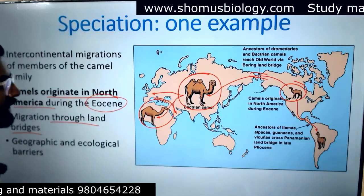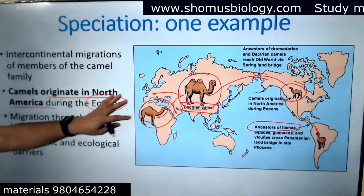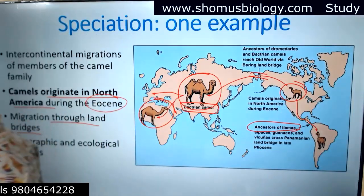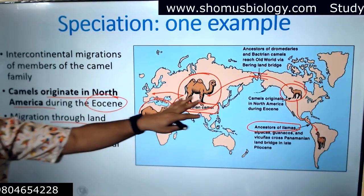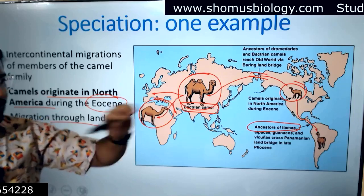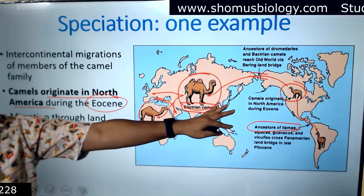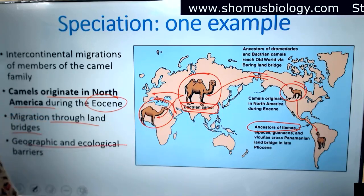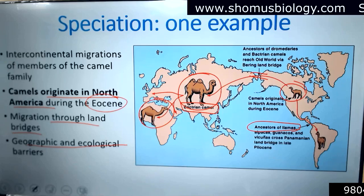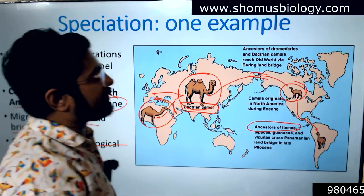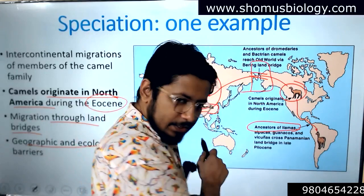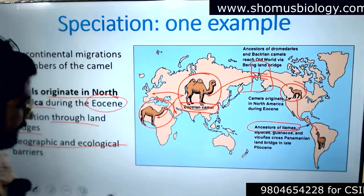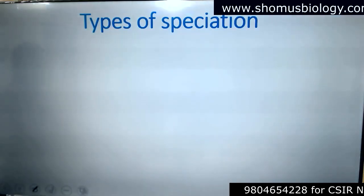They created different forms in different locations. All the different types of camel species we observe today have one ancestor that started its journey from North America. They are geographically or ecologically isolated — there is an ocean gap in between. This ecological isolation helped develop the different species. These are known as geographical and ecological isolation.